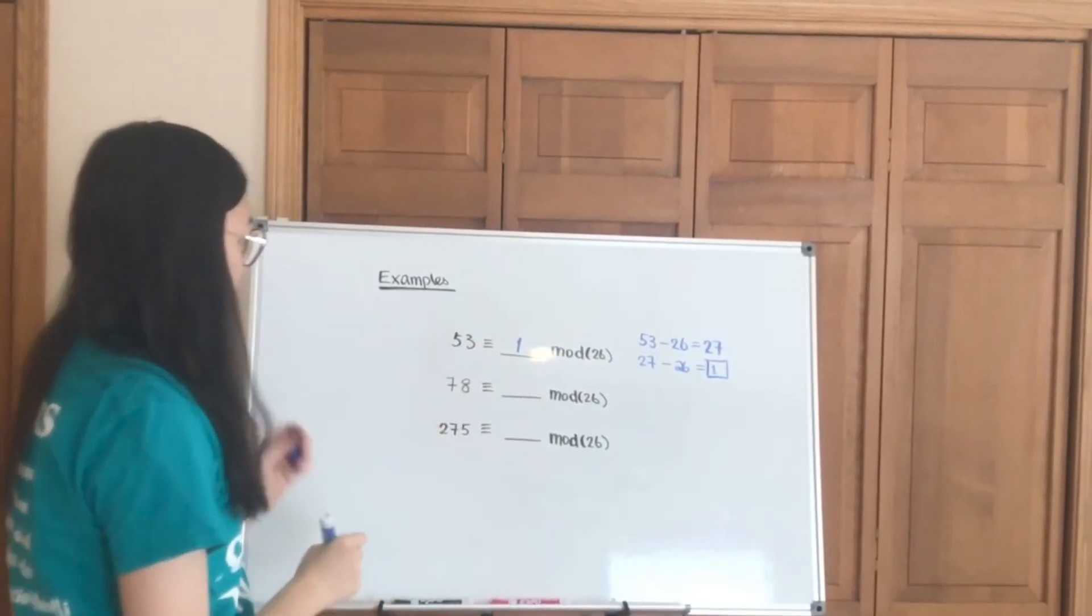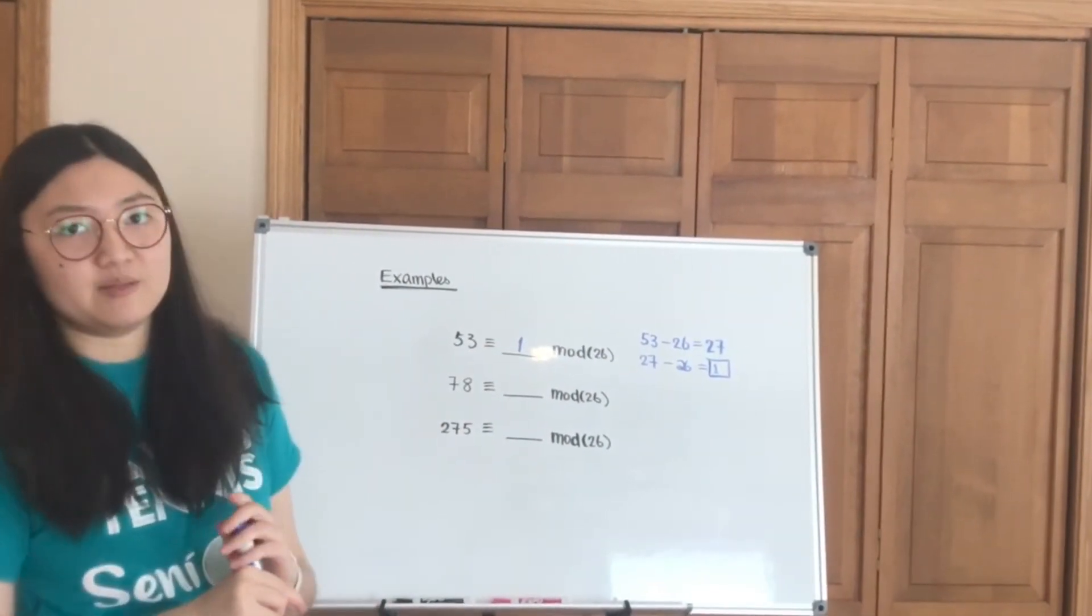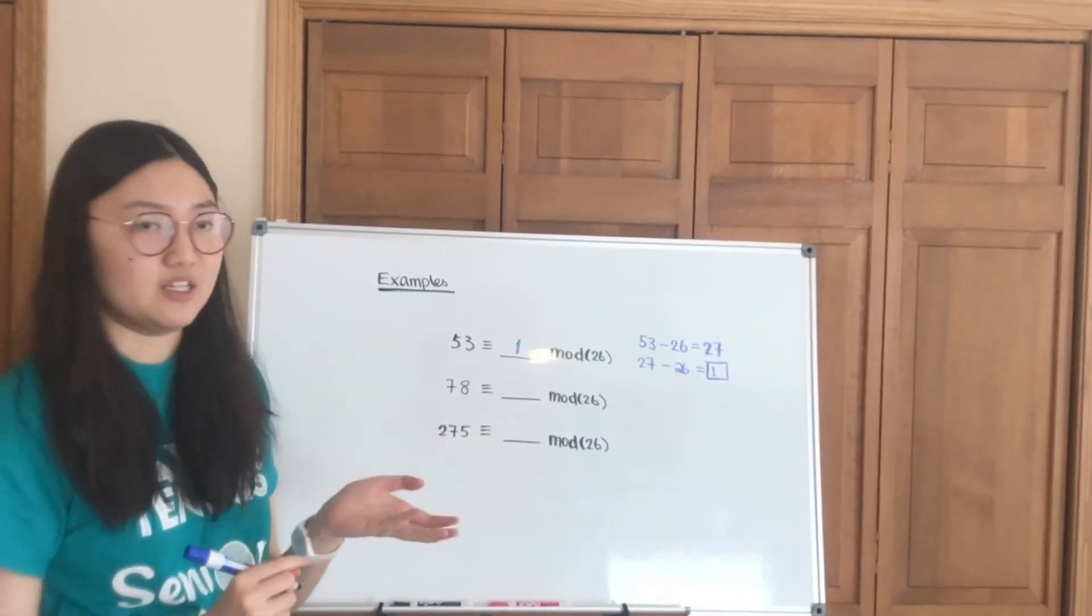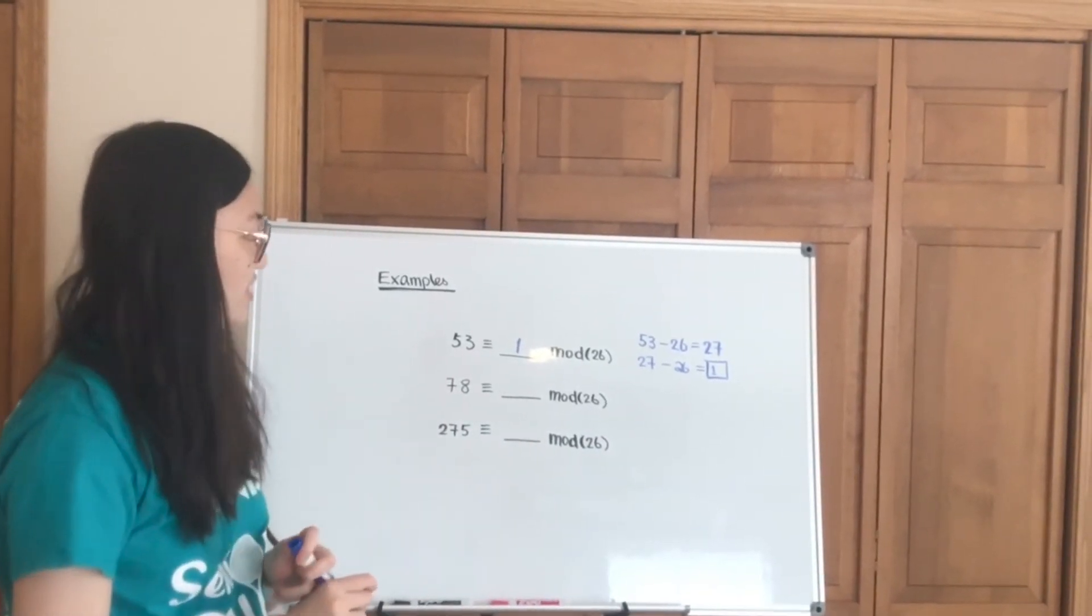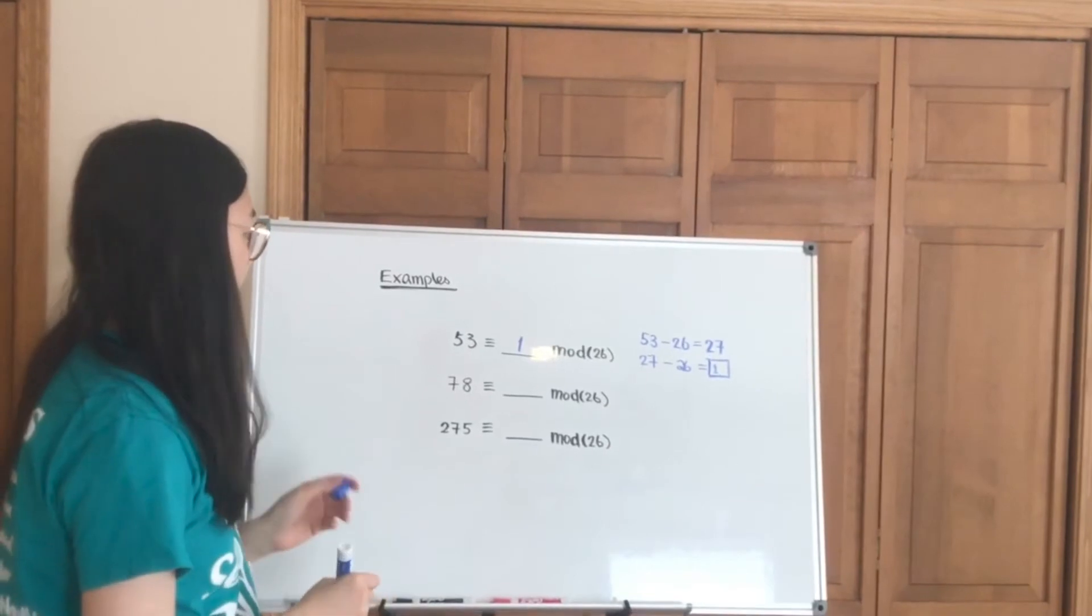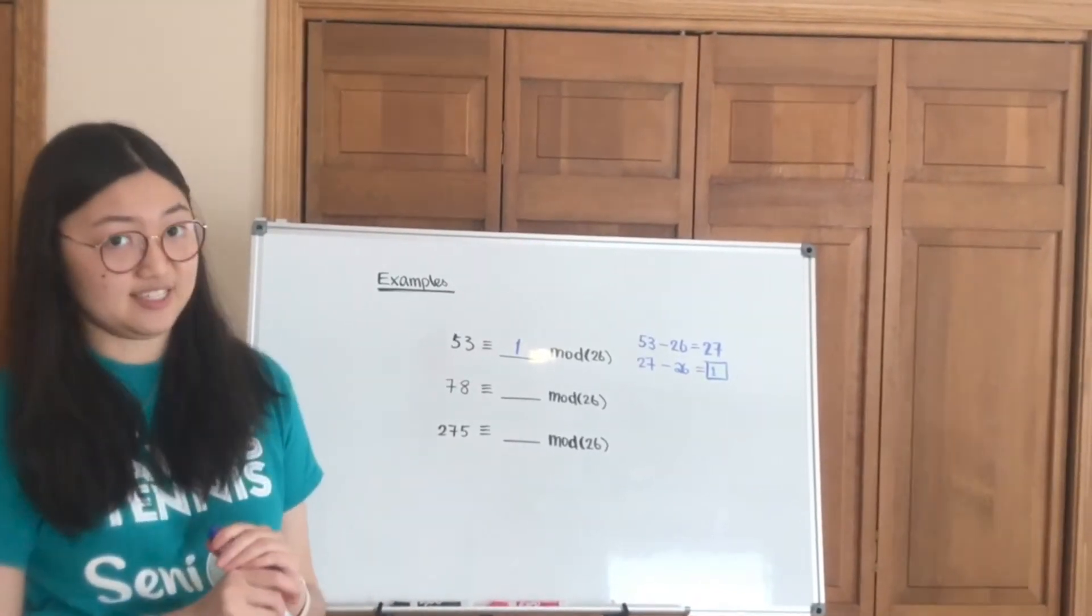So the equivalent sign basically means kind of equals but in modular terms. So that reads as 53 is equivalent to 1 in mod 26.